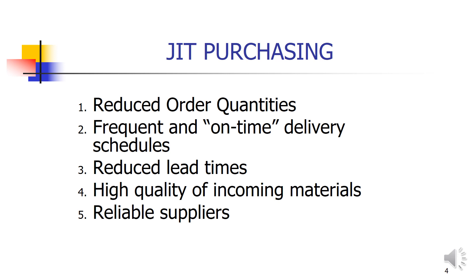Reduce lead time: the shorter the lead time, the better the system will be. The basic objective of Just In Time purchasing is to reduce or minimize the lead time — the time between placing an order until you receive it. High quality of incoming materials: we transfer all quality perspectives, specifications, and standards from the manufacturing to the supplier. We are not going to use any supplier who does not commit himself to producing high quality materials, raw materials, or component parts.